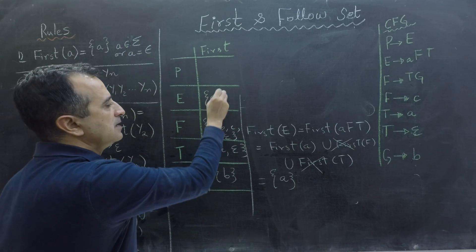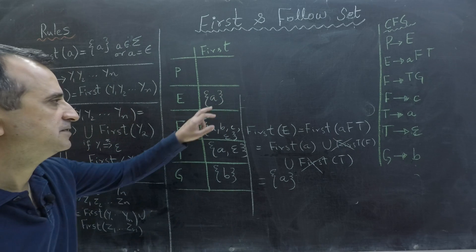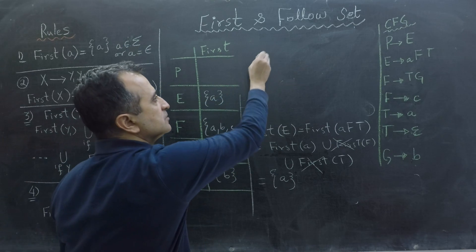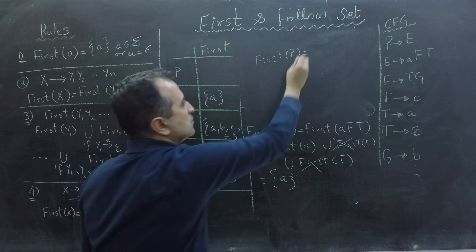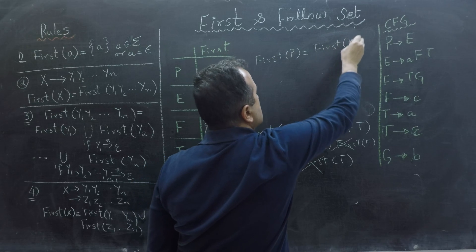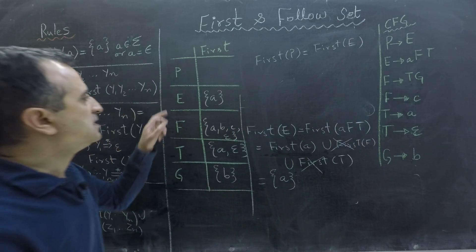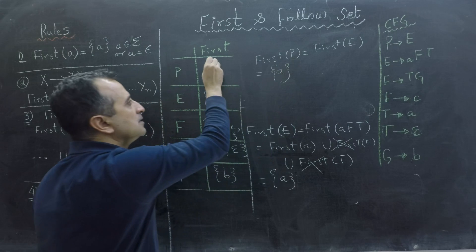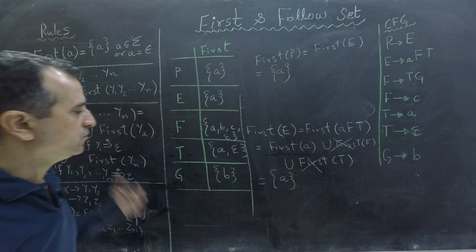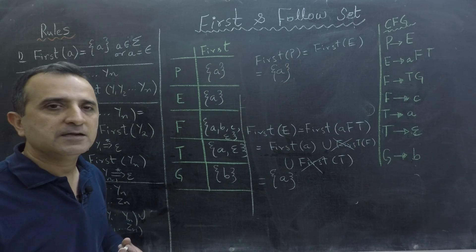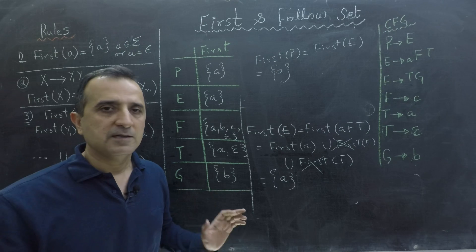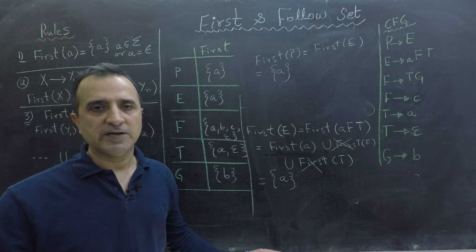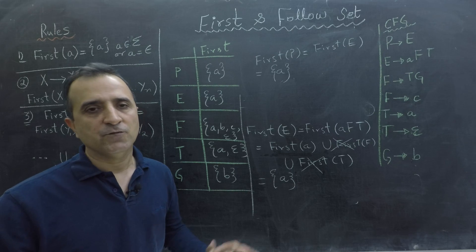Finally, I have to find First of P. According to the grammar, First of P is equal to {a}. So I write a in this First Set. I have used all of those rules and am able to find the First Set for each non-terminal. These rules are so simple that once you understand them for one context-free grammar, you can apply them to any other context-free grammar and find the First Sets for all non-terminals.